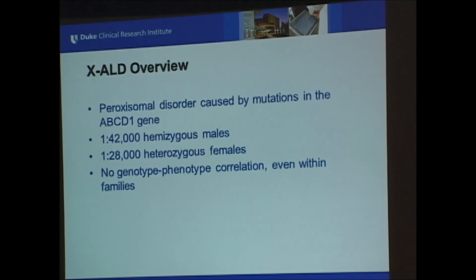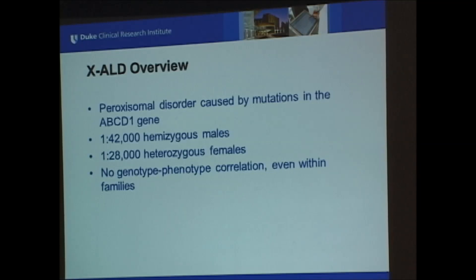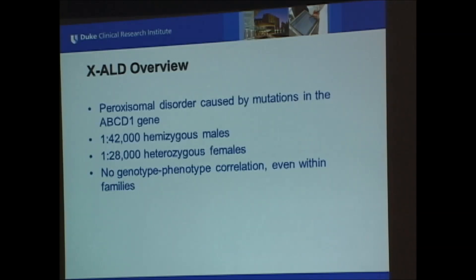Adrenal leukodystrophy is a peroxisomal disorder caused by mutations in the ABCD1 gene. About 1 in 42,000 males are hemizygous for the mutation, and there are about 1 in 28,000 heterozygous females. One of the key things to recognize — and one of the things that makes newborn screening challenging — is that there is no known genotype-phenotype correlation, even within families. So it's really hard to predict what the outcome is going to be.